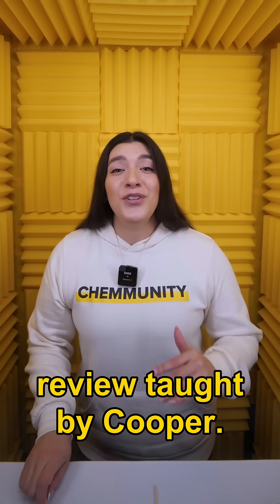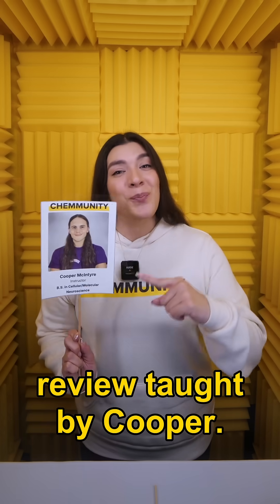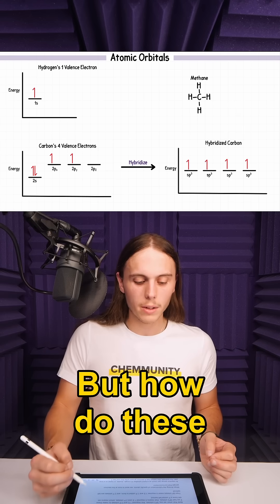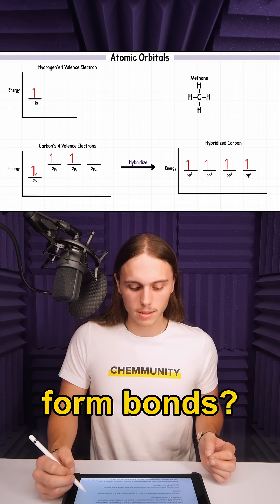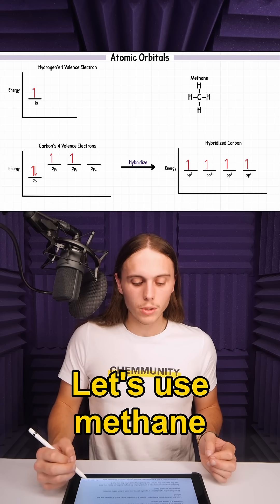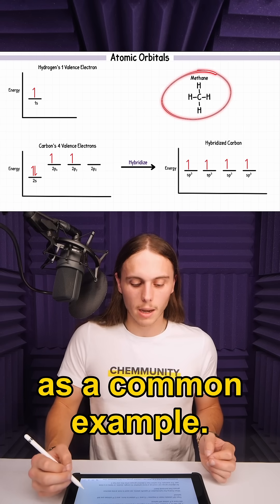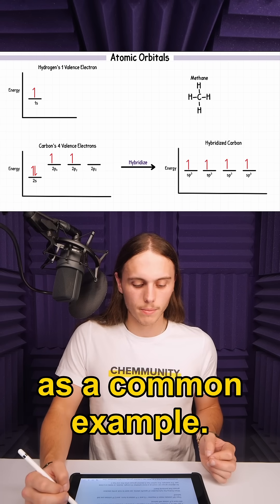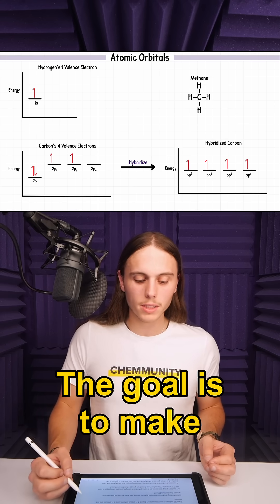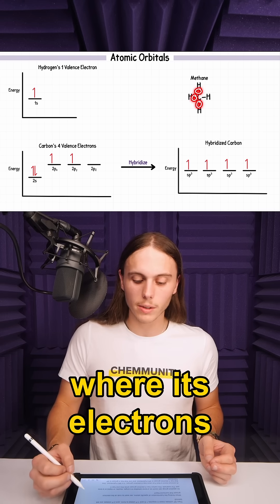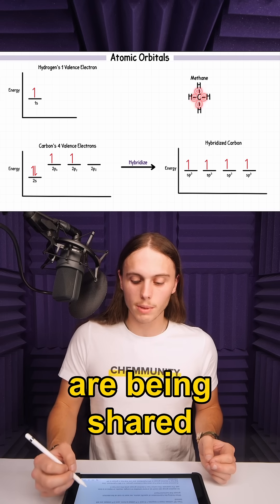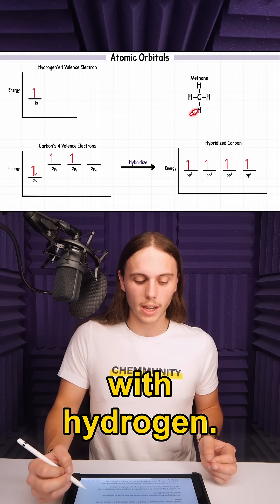Here's a quick hybridization review taught by Cooper. But how do these atomic orbitals form bonds? Let's use methane as a common example. The goal is to make carbon have four bonds where its electrons are being shared with hydrogen.